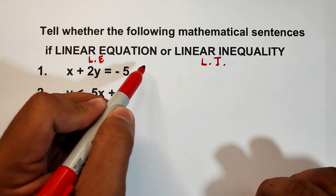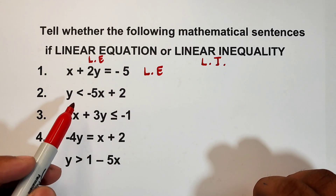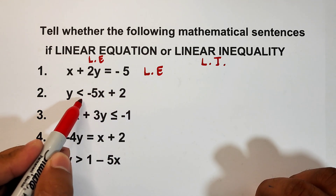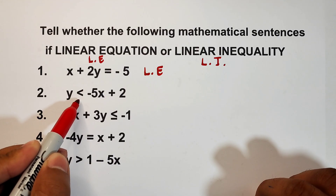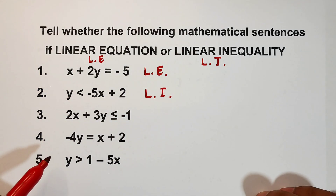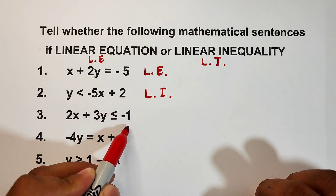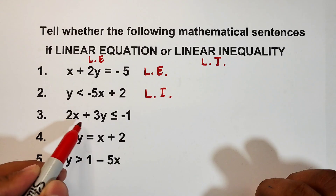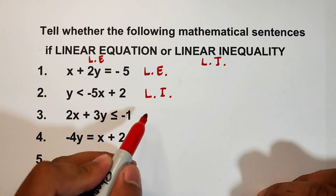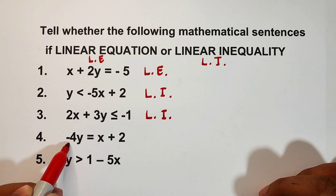Since we have an equal sign, number one is a linear equation in two variables. Number two: y is less than negative 5x plus 2. Since the less than symbol is present, this is an example of linear inequality in two variables. Number three: 2x plus 3y is less than or equal to negative one — also a linear inequality.